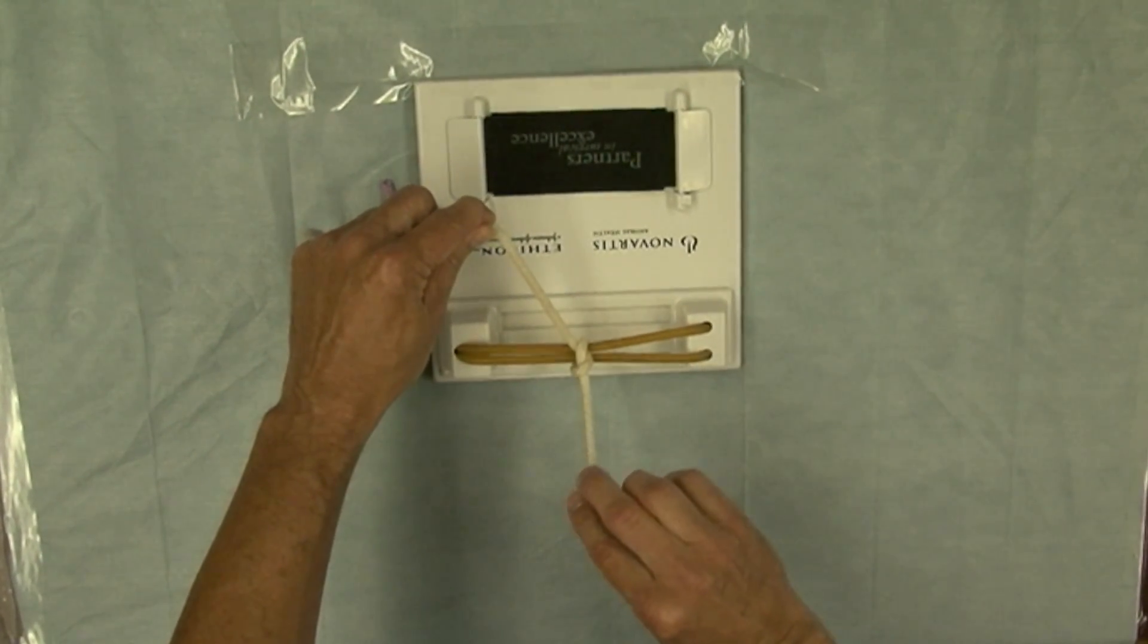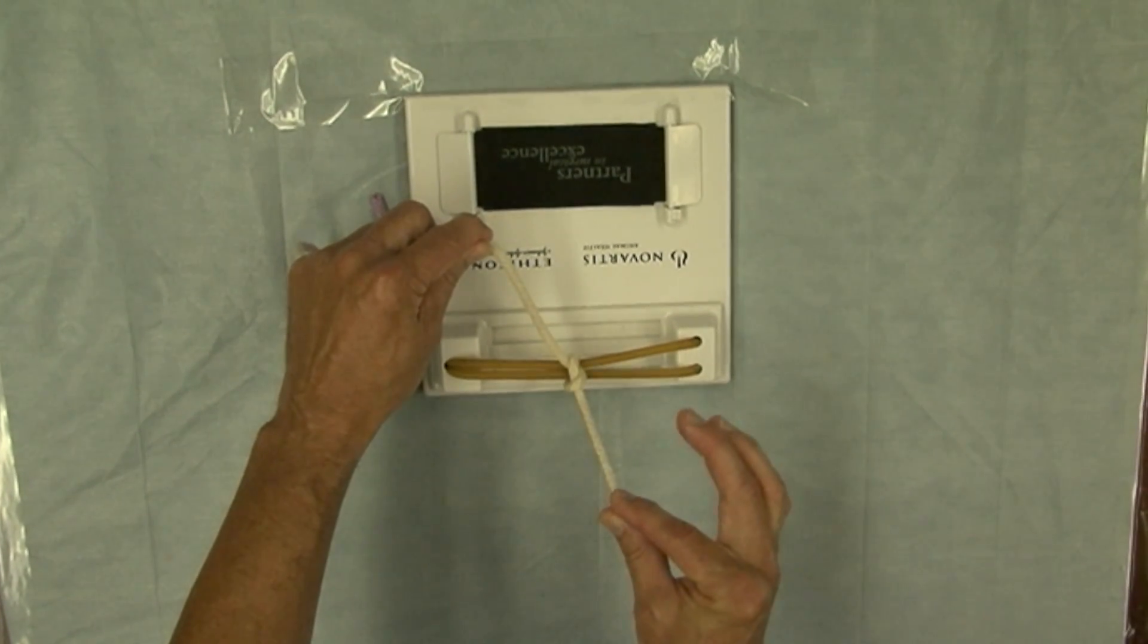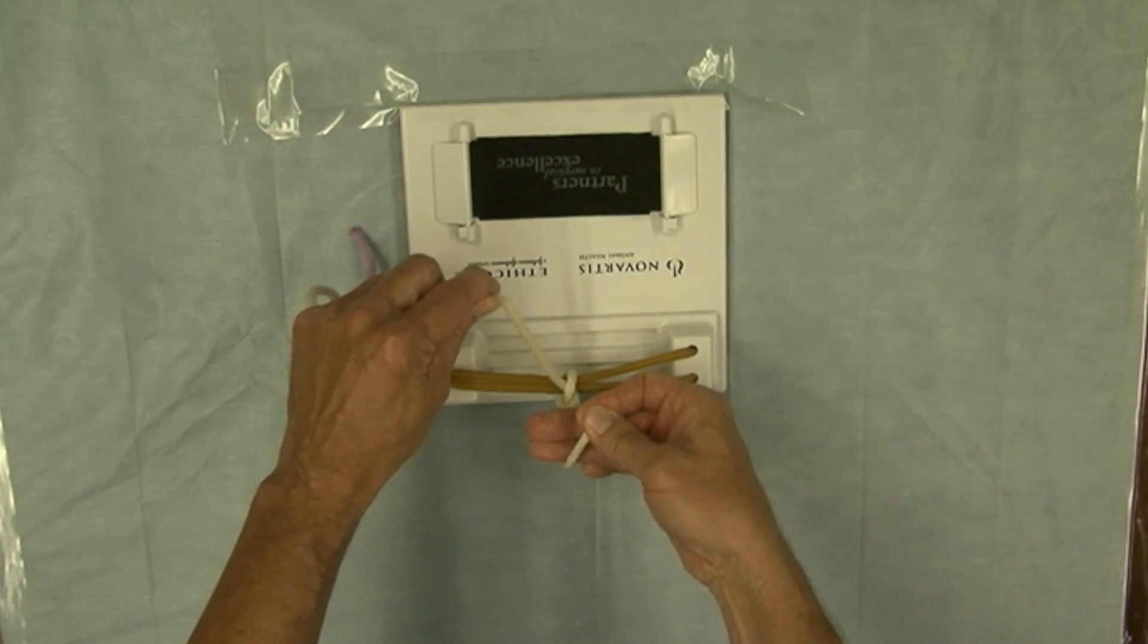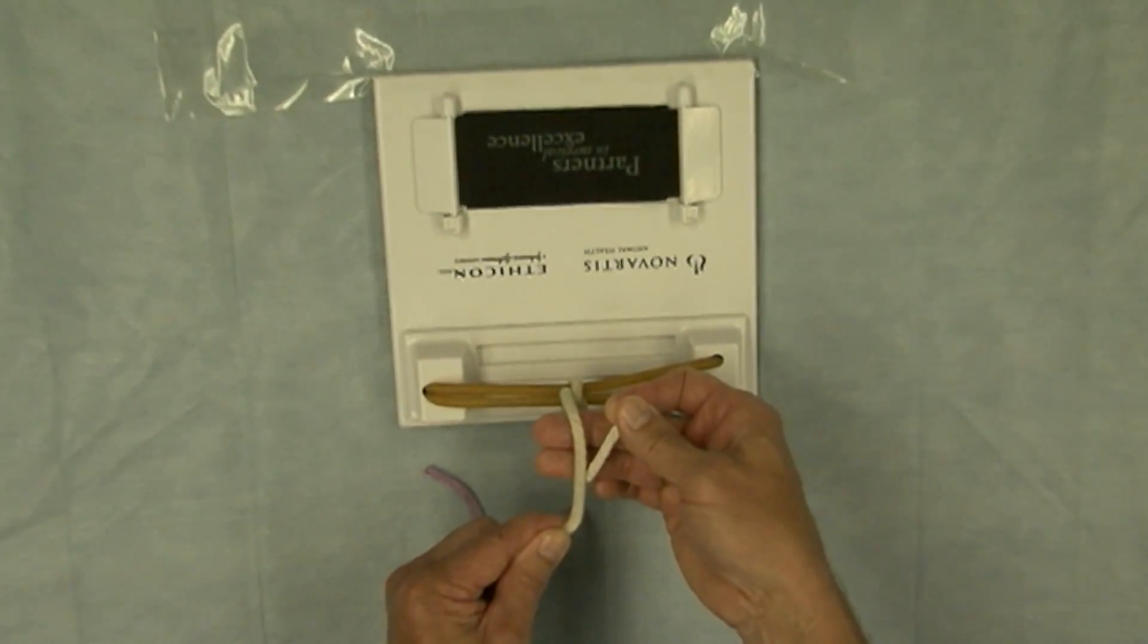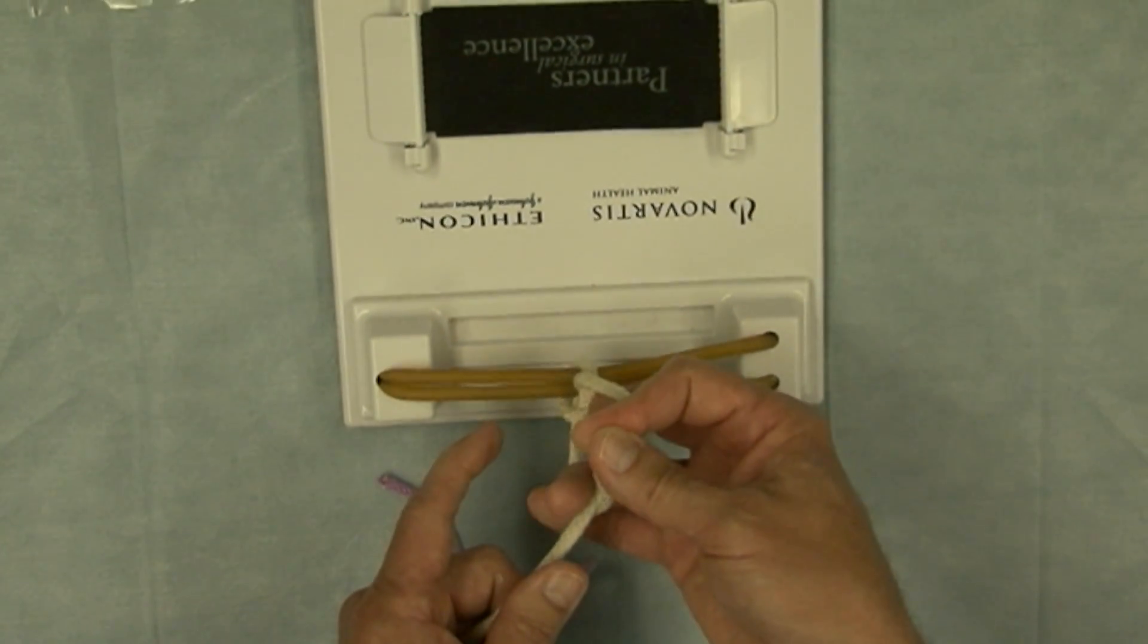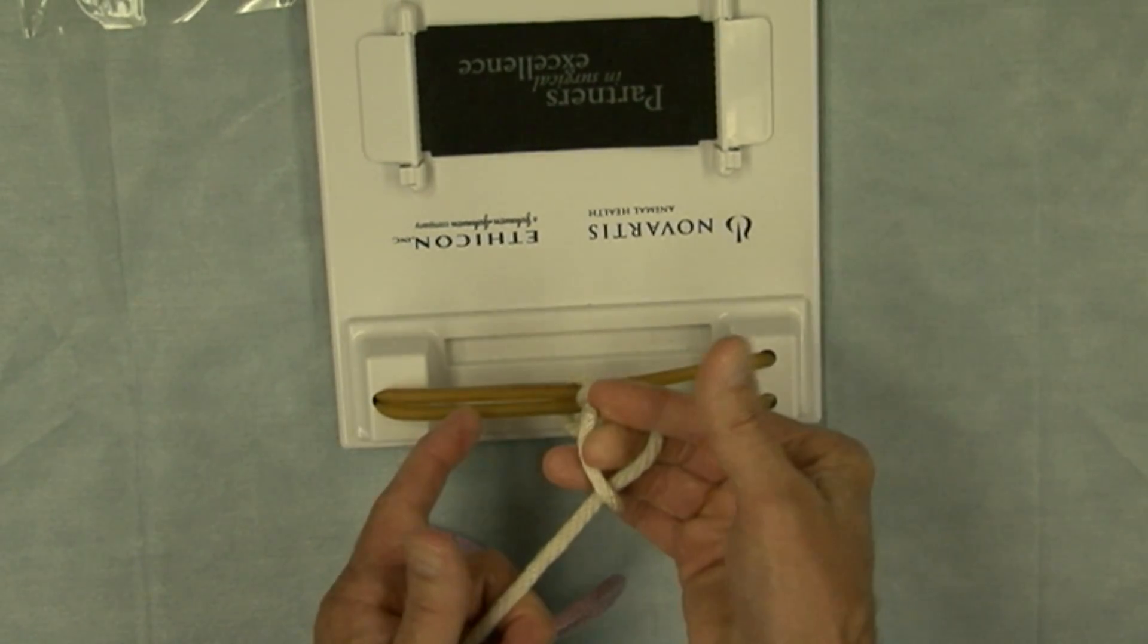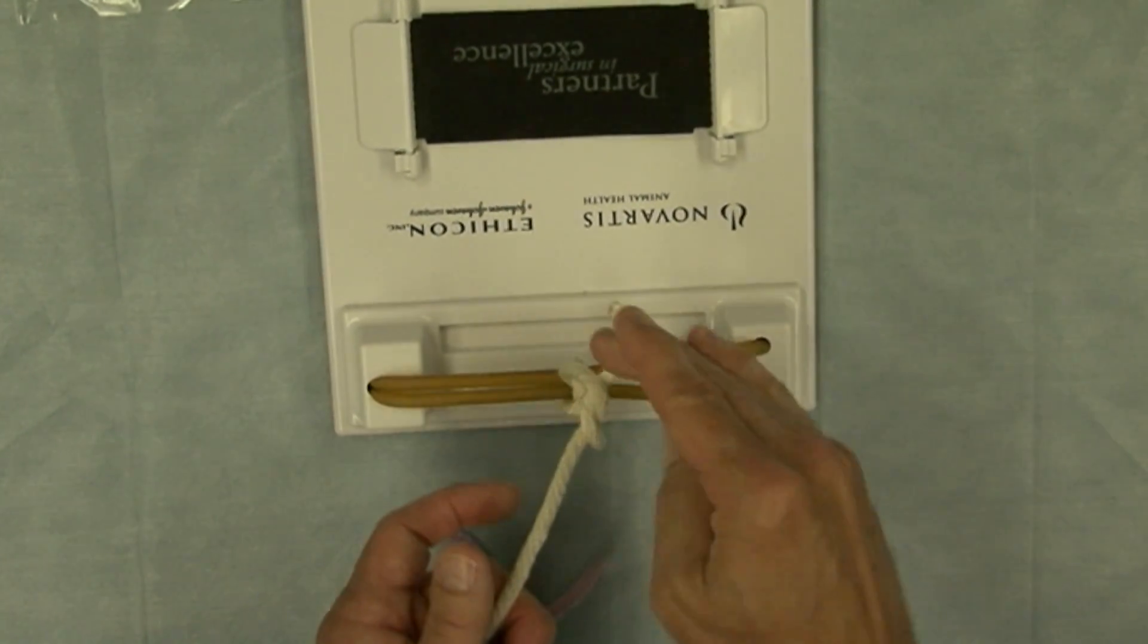Next I take the suture now in between the tips of my thumb and index finger, roll my middle and ring fingers around to create half a loop, complete the loop, and now I'm going to use my middle finger to go around, trap between my middle finger and ring finger the end of the suture, and bring it through the loop.